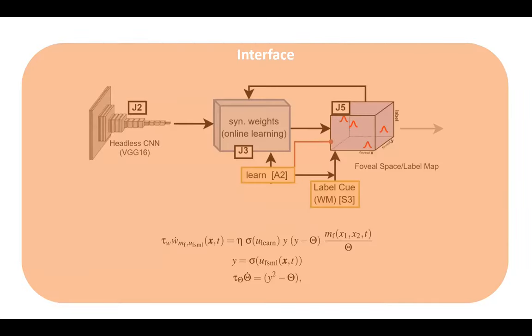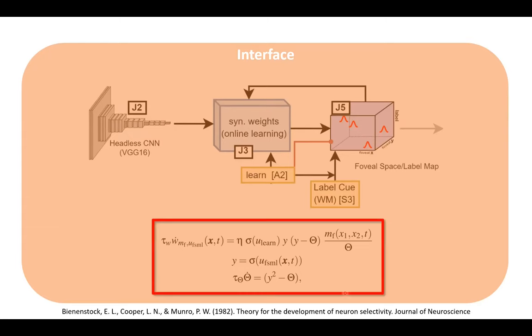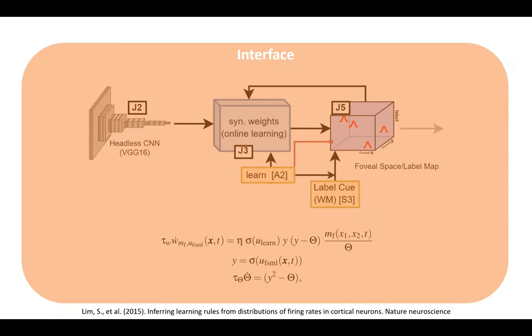For this interface, we propose that the mapping from the distributed representation of CNN feature maps of a headless CNN can be mapped to the localist representation of a three-dimensional neural field, defined over foveal space and object identity, and that this mapping can be learned. For this we propose to use the neurally plausible BCM learning rule — the Bienenstock-Cooper-Munro rule — because it is compatible with neural learning processes found in the IT cortex.